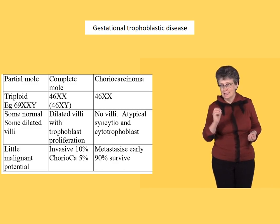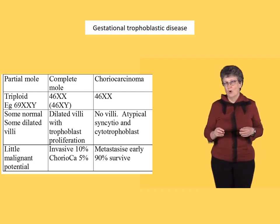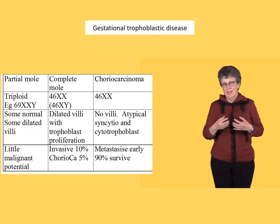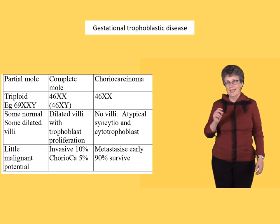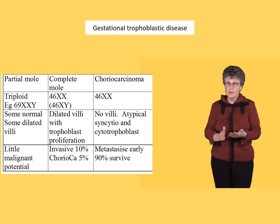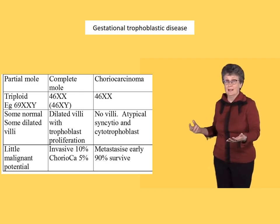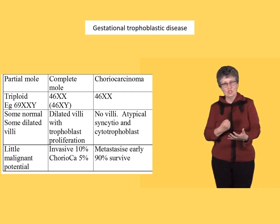However, 90% of these women survive. You might remember choriocarcinoma as a tumour of the testis, and many of those people don't survive. So why do women do so well? That's because all the chromosomes in this tumour are foreign to the women — they come from somebody else. So the inflammatory cells, the guardians of cancer, can attack this tumour because it's a foreign set of DNA.